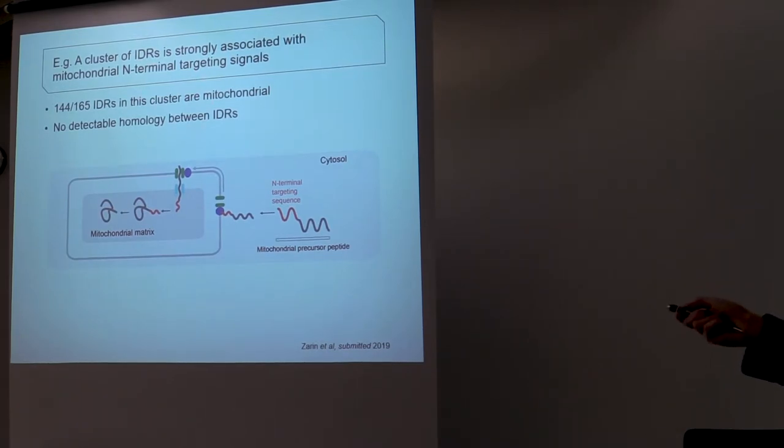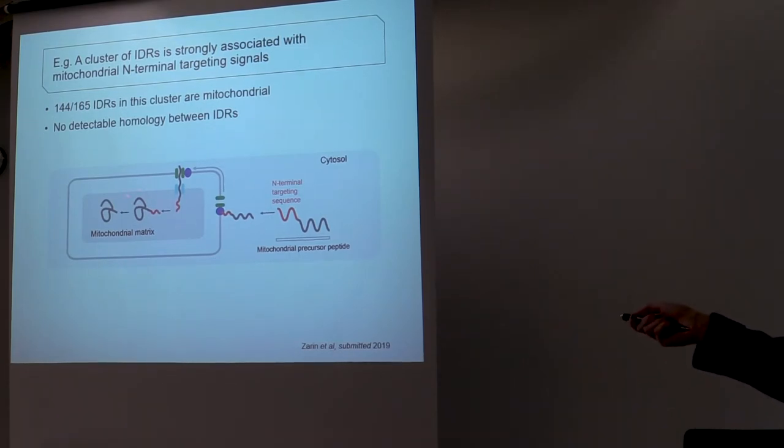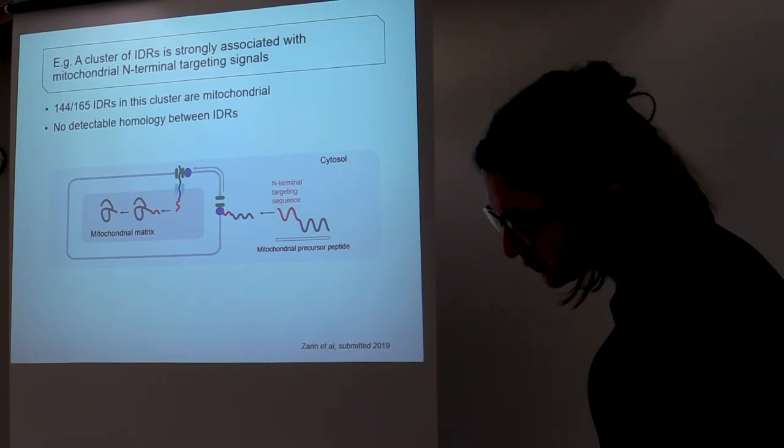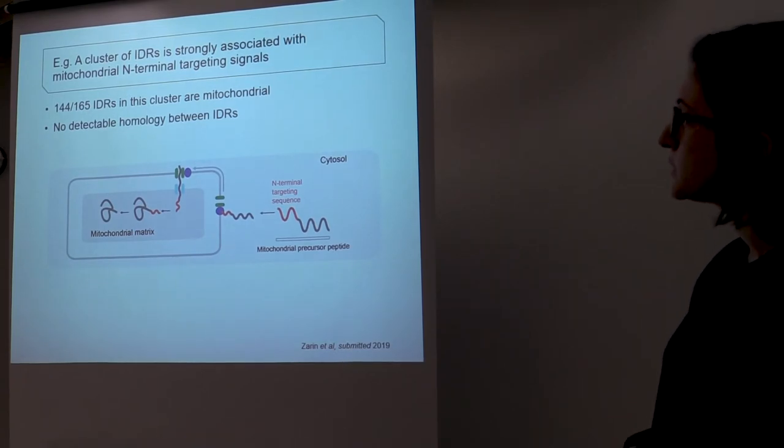And so we hypothesized, because they also seemed like they were mostly N-terminal, we hypothesized that these were mitochondrial N-terminal targeting signals, which have actually been pretty well studied. So basically, the concept behind these signals is that you have a mitochondrial precursor peptide, and there's an N-terminal targeting sequence which targets this precursor to the mitochondria, and eventually the signal gets cleaved and the protein folds as a mitochondrial protein.